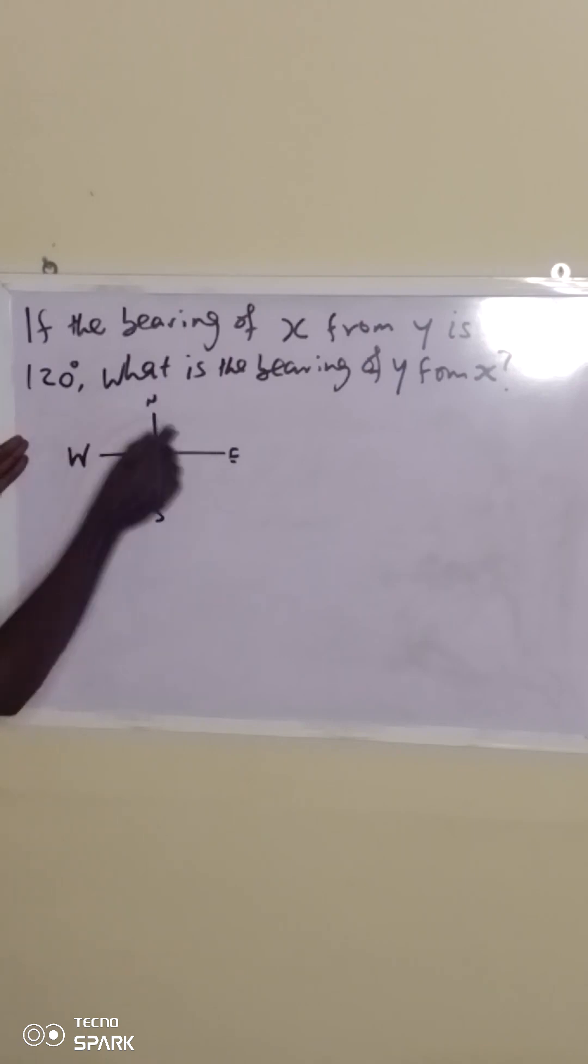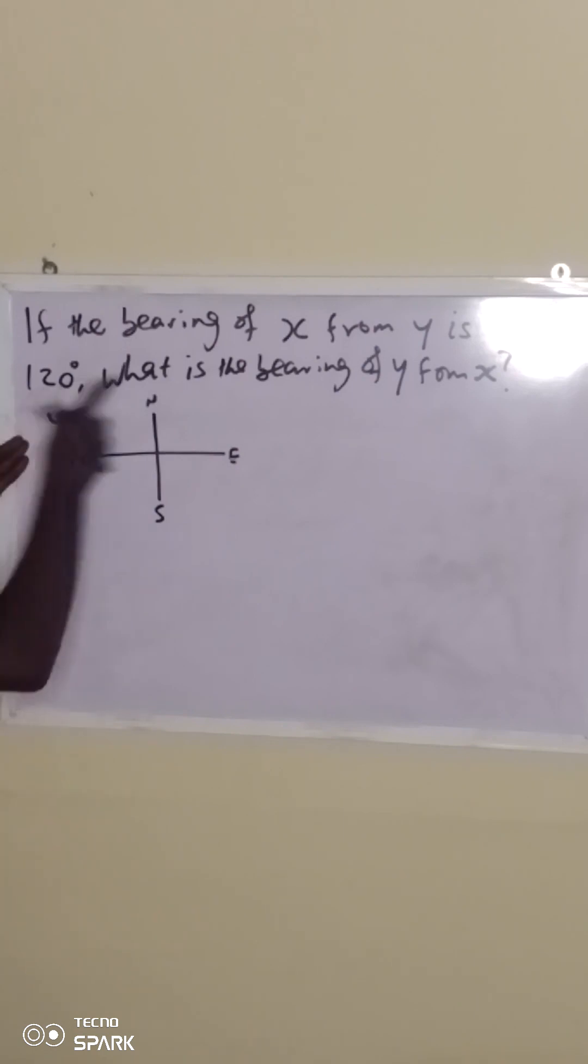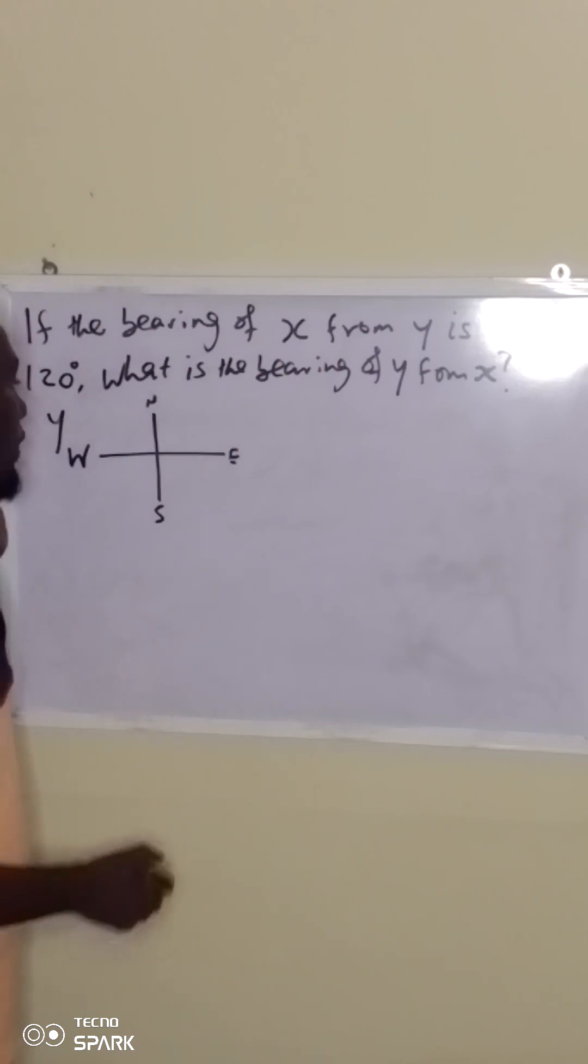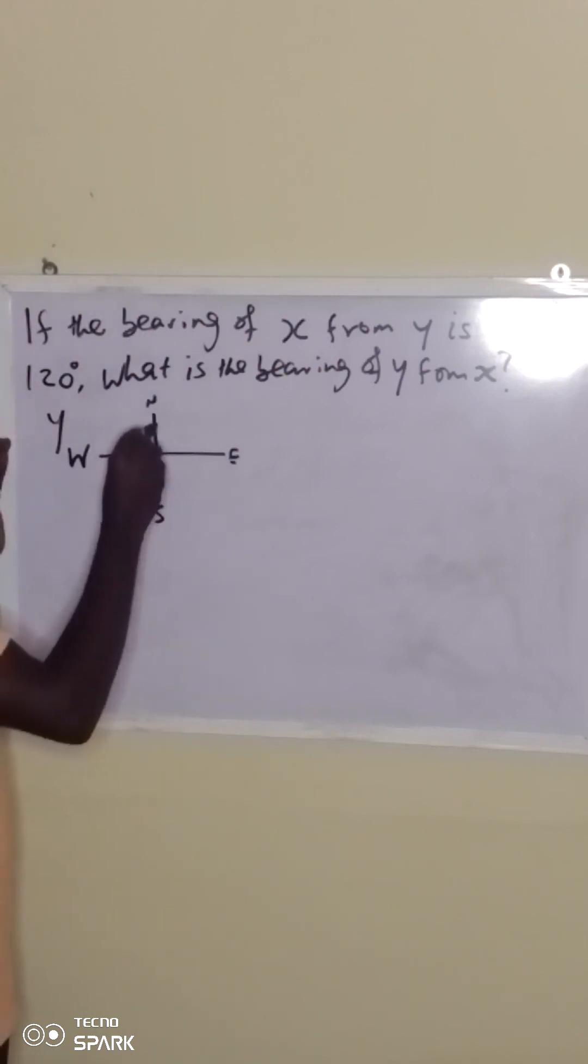This particular cardinal point represents y. Now, the bearing of x from this y is 120 degrees. That means we measure 120 degrees from the north in clockwise direction. This is where the north is, and then clockwise to go down.